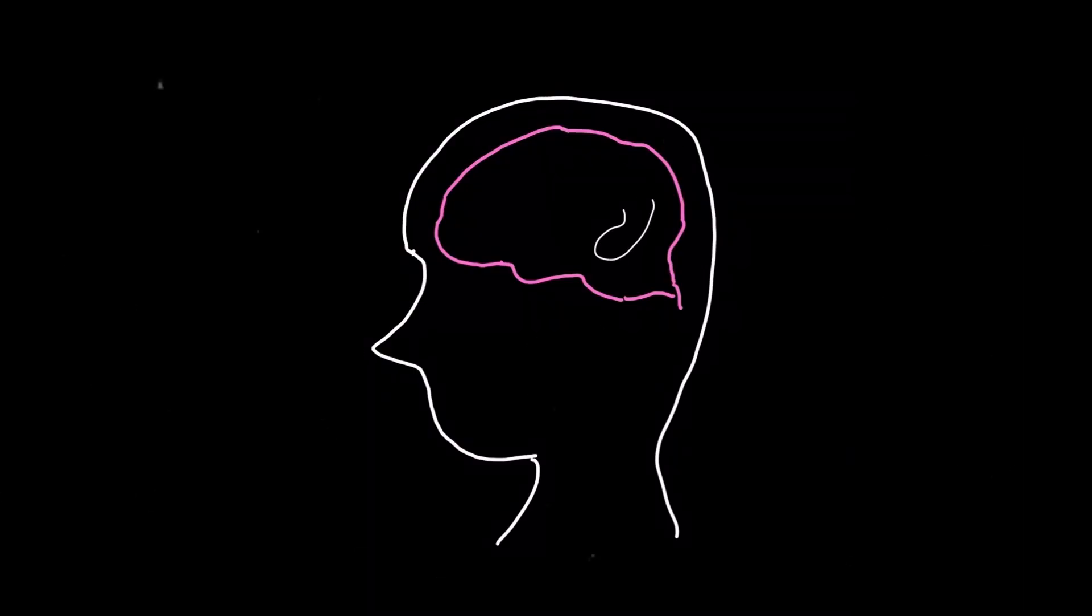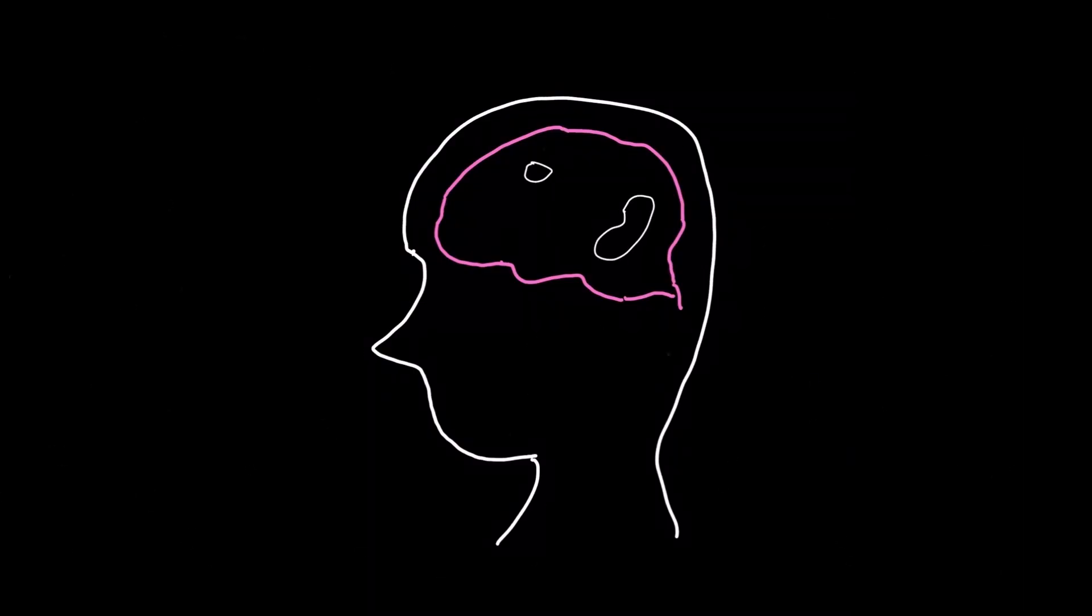We start by making a map of how brain regions are connected to each other by white matter pathways. This map is called a connectome.